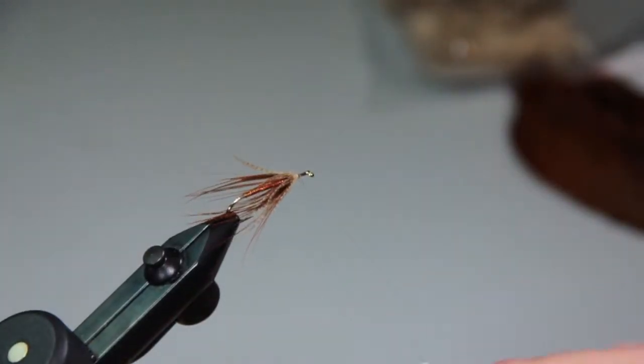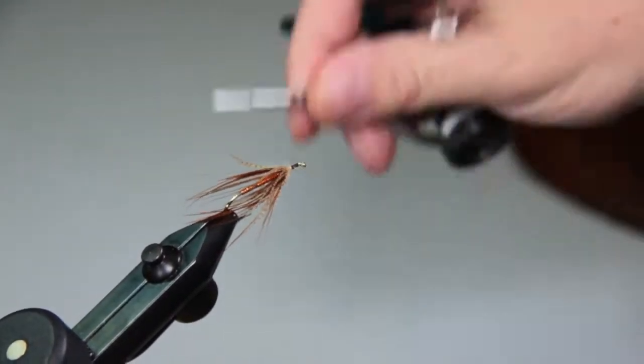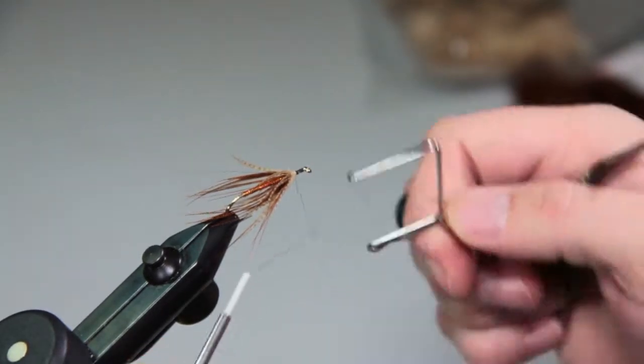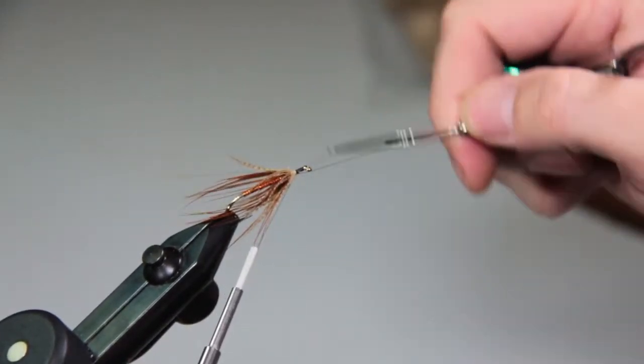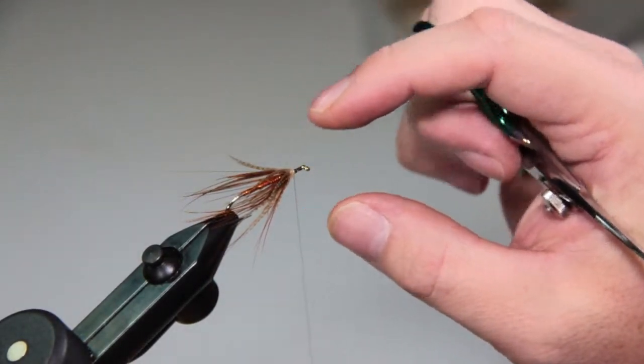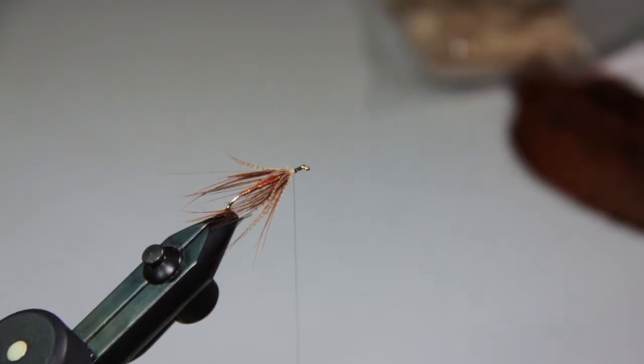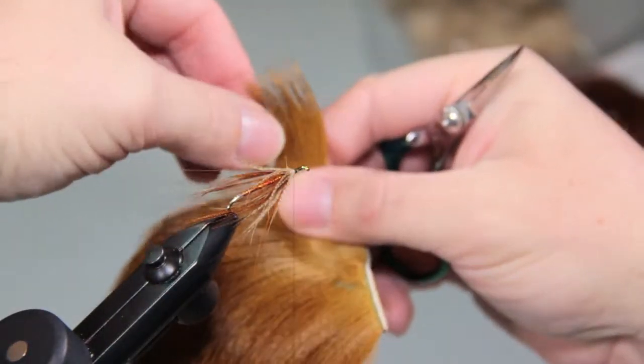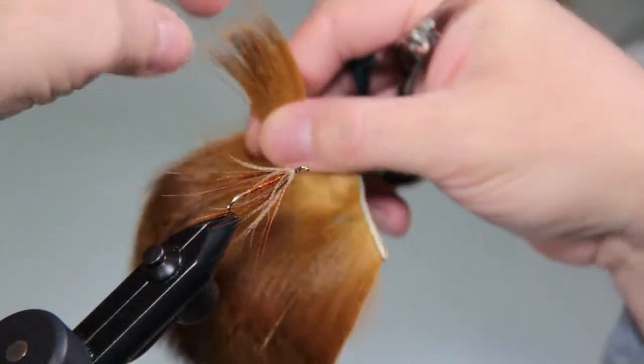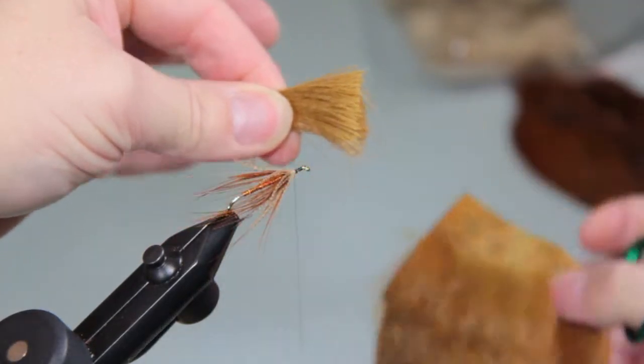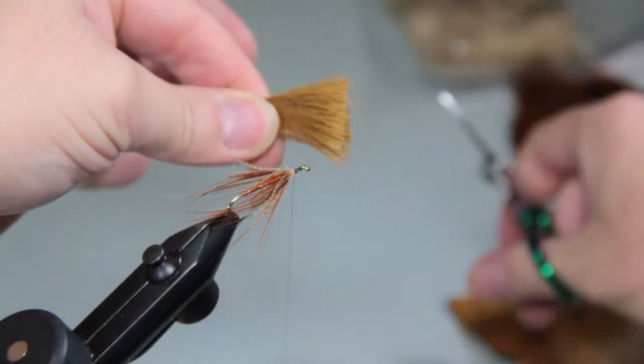One of the things I've learned about spinning hair, is just a light basic thread down, and when you're first spinning the clump, it's nice to have a whip finish right at the point of the first spin that creates the collar so the thread doesn't want to walk and move forward. With this done, I'll try to do this for the camera, but we're really only looking for one medium pinch of hair, we're not looking for a really heavily packed muddler head.